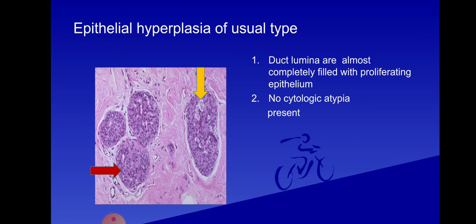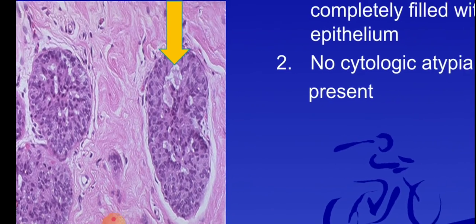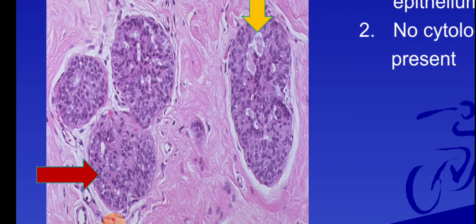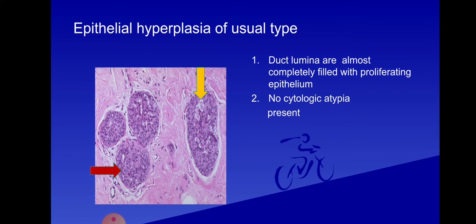Now elaborating on proliferative fibrocystic changes: the first is epithelial hyperplasia of usual type — without any atypia. The ductal lumens are almost completely filled with proliferating epithelium. The flat cells near the basement membrane are myoepithelial cells, and the central lumen is filled with epithelial cells. All nuclei are of equal size — no nuclear atypia. Some fenestrations are present with circumferential pattern. This is epithelial hyperplasia of usual type.